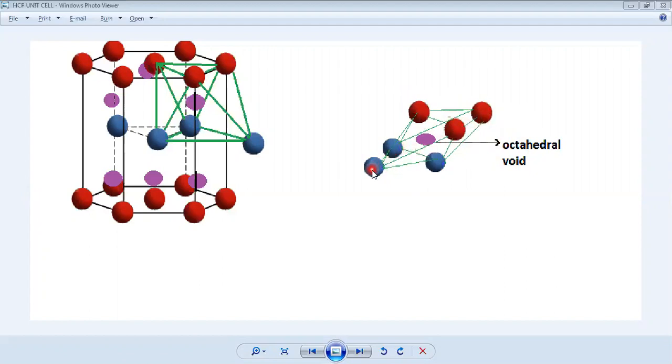The similar arrangement is observed in an HCP unit cell with three atoms of top layer and three atoms of middle layer. There is an octahedral void in between them. Similarly, another arrangement is found with these three atoms and these three atoms.